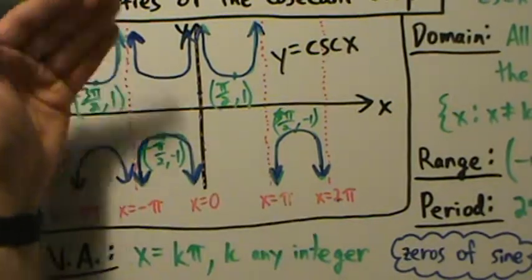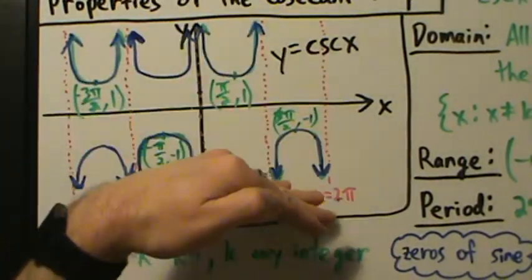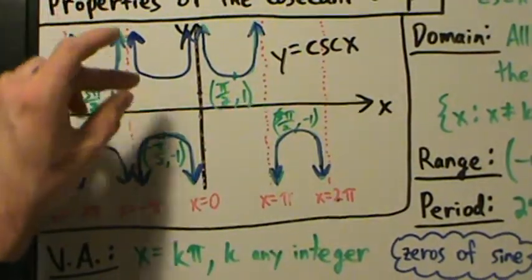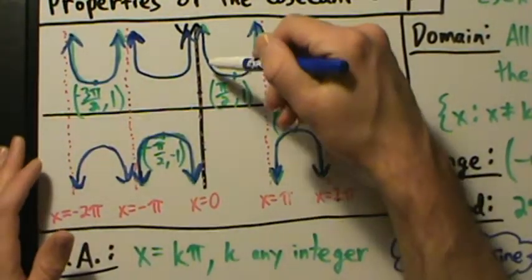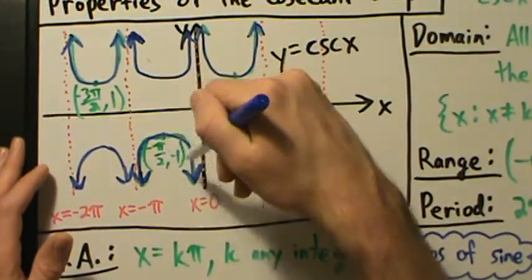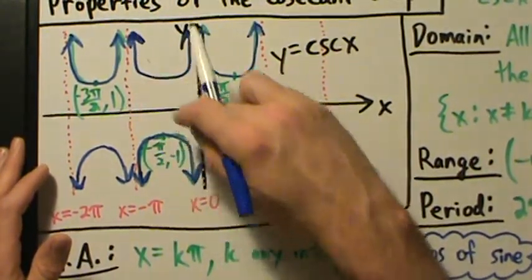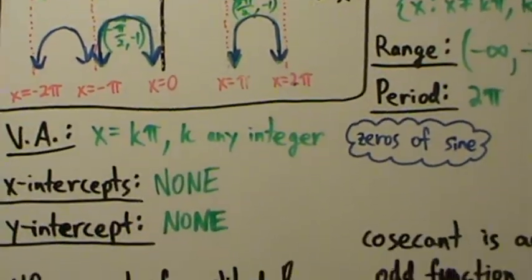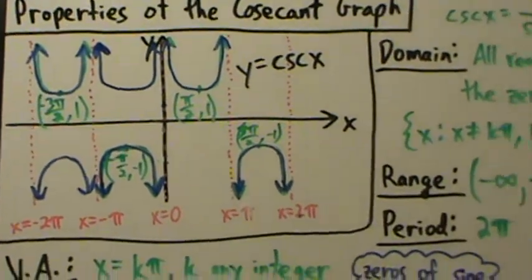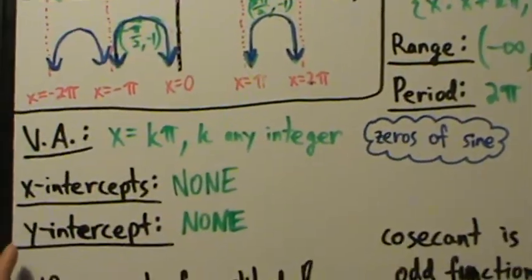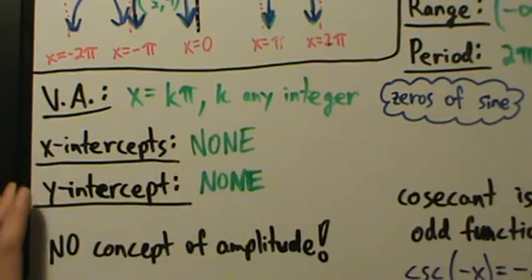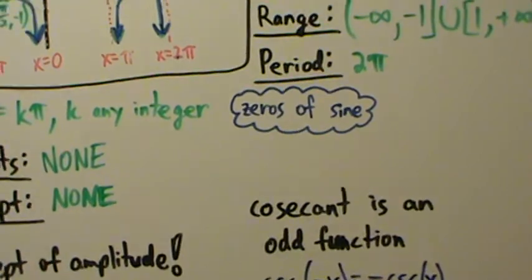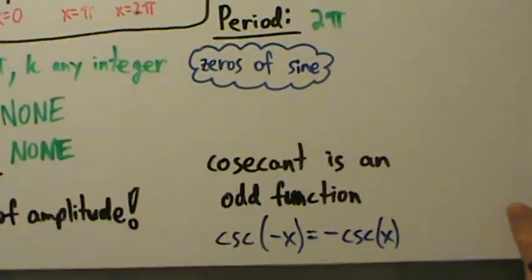So to summarize the properties of the cosecant graph: domain is all real x such that x ≠ kπ where k is any integer; range is (−∞, −1] ∪ [1, ∞); period is 2π; vertical asymptotes at x equals kπ; no x-intercepts; no y-intercepts; no concept of amplitude; best to use 'horizontal shift' rather than 'phase shift'; and cosecant is an odd function.